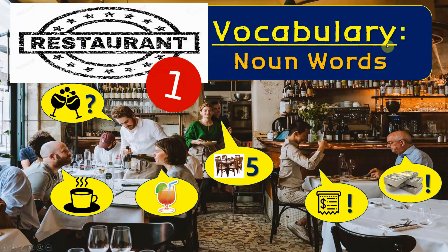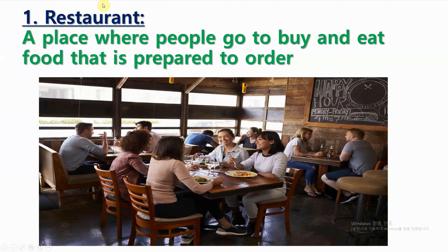Restaurant Vocabulary. Noun Words. Number 1: Restaurant. A place where people go to buy and eat food that is prepared to order.